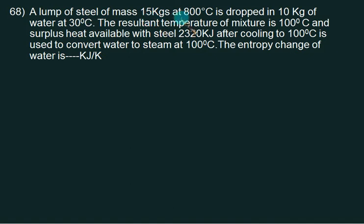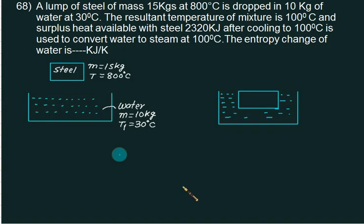A lump of steel of mass equal to 15 kgs at 800 degree Celsius is dropped in 10 kg of water at 30 degree Celsius. So this is the before and this is after drop. Mass of steel will not change. Mass of water will not change. But the steel block is at high temperature. So heat will be lost by the steel and we assume that heat is gained by water.